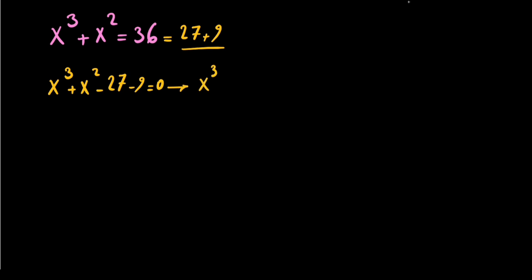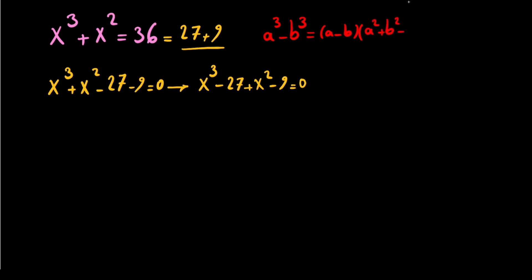So we can write x cubed minus 27 plus x squared minus 9 equals 0. Before I continue — you know that if you have a cubed minus b cubed, you can write it as (a minus b)(a squared plus b squared plus a times b). And if you have a squared minus b squared, you can write it as (a minus b)(a plus b).